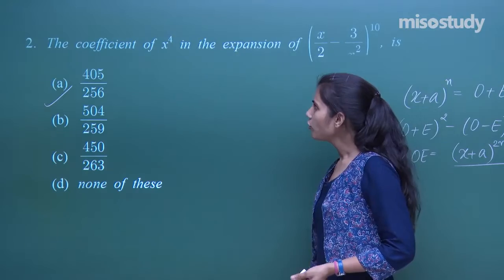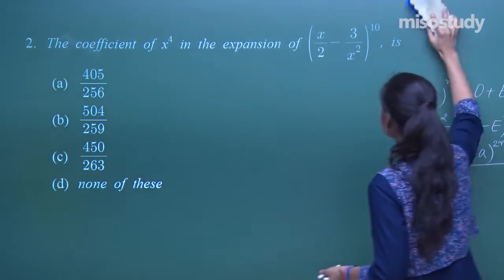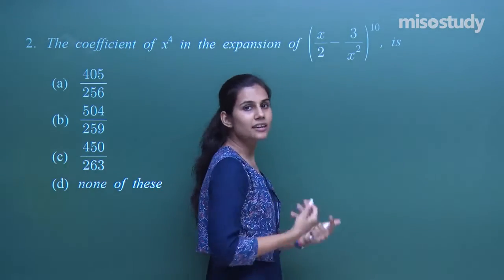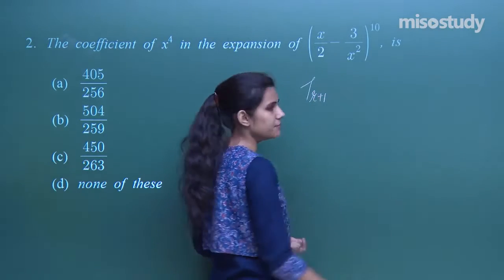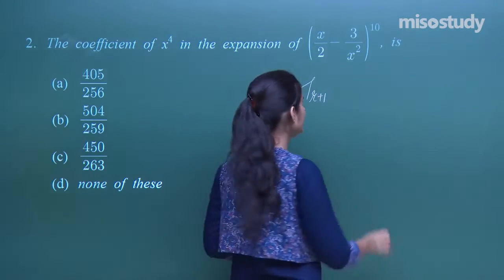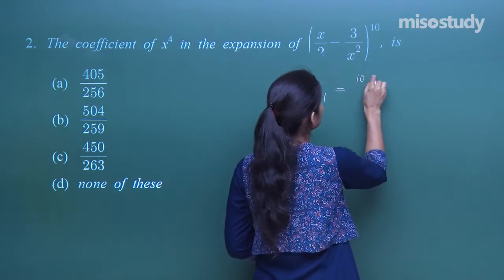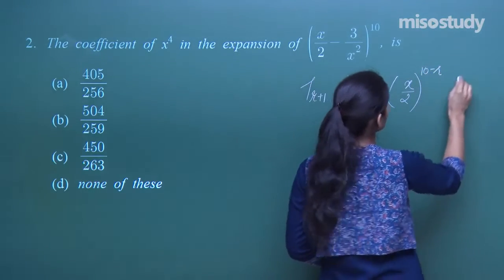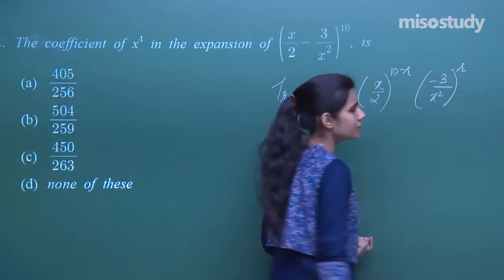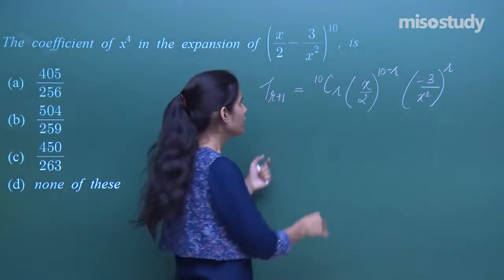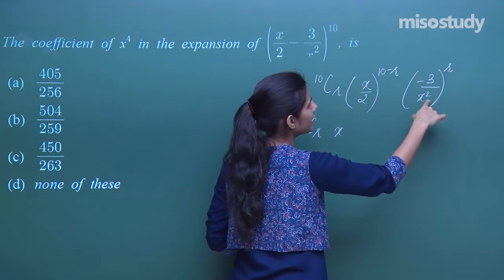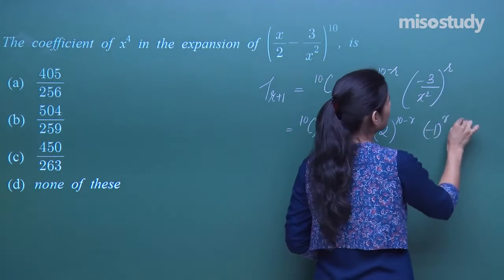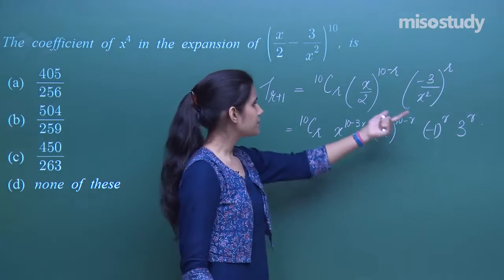The next question asks for the coefficient of x⁴ in the expansion of (x/2 - 3/x²)^10. The r+1th general term T_{r+1} is 10Cr · (x/2)^(10-r) · (-3/x²)^r. This gives 10Cr · x^(10-r-2r) / [2^(10-r)] · (-1)^r · 3^r, meaning the power of x is 10 - 3r.